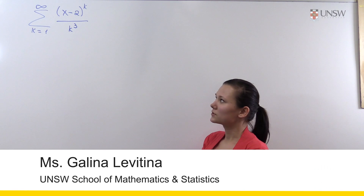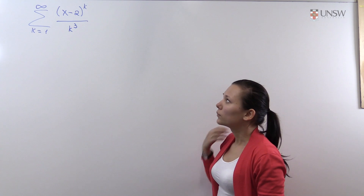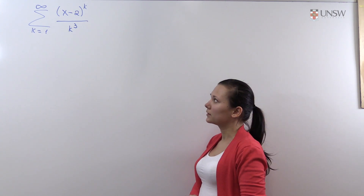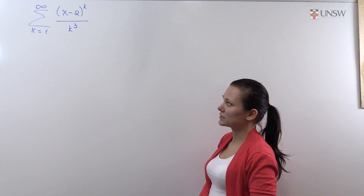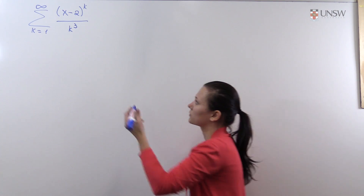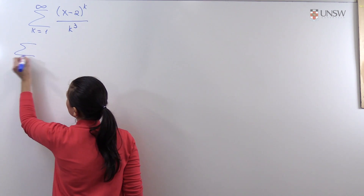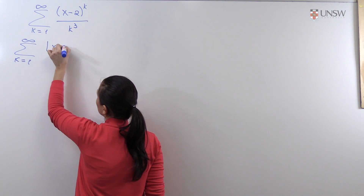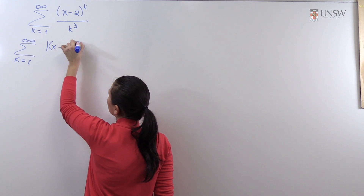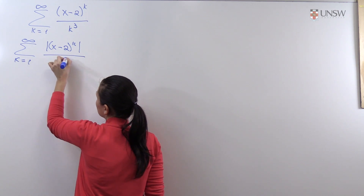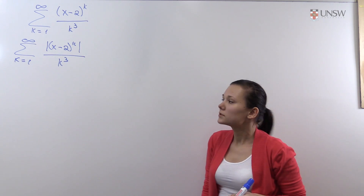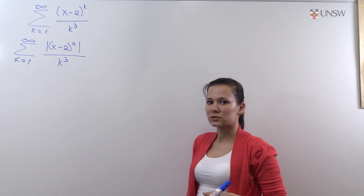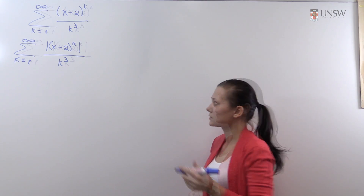In this example we need to find the interval of convergence of a power series. Whenever we need to find the interval of convergence of a power series, we first look at the power series composed of the absolute values of each term. To find the interval of convergence we apply the ratio test.